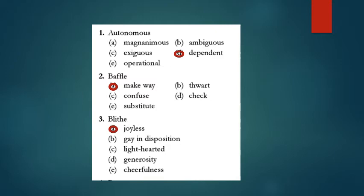Blithe means cheerful. Remaining all are synonyms - they come closer to the meaning. Only one word which is opposite in meaning is joyless. Gain disposition means very happy in nature.